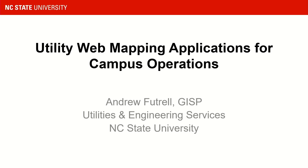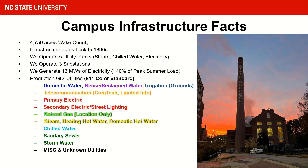Good afternoon. I'm Andrew Futrell with NC State. I've been with NC State about eight years now and I've gotten to see GIS kind of grow from the ground up with utilities. To give you some background, we're pretty large — we have about 5,000 acres of land in Wake County. Some of our infrastructure is over 100 years old, going back to the 1890s. We operate five utility plants and three substations.